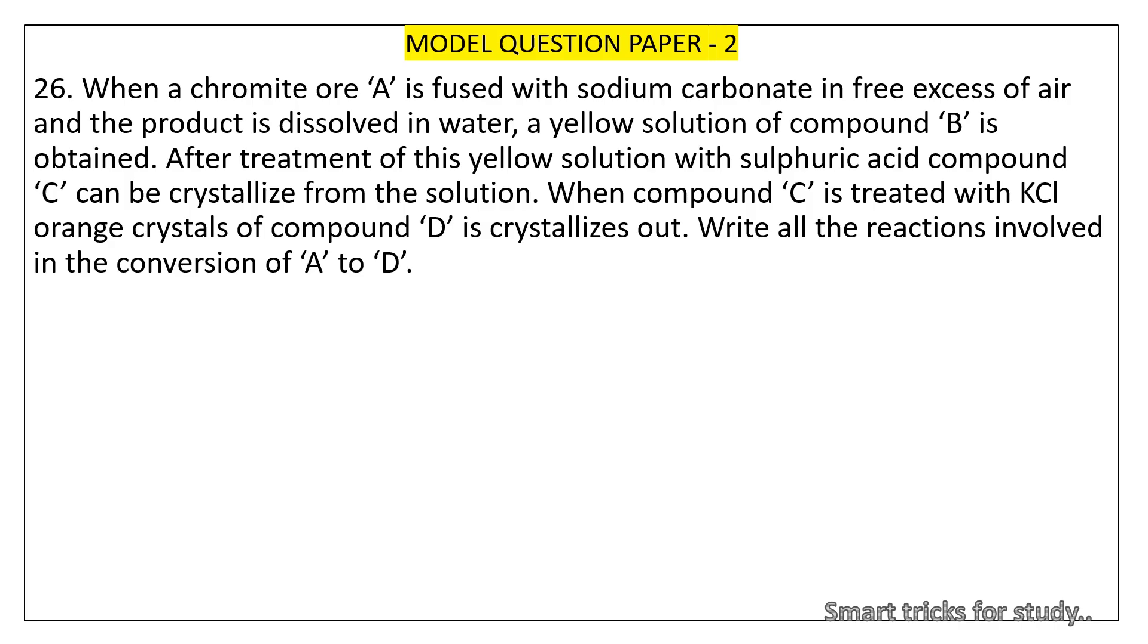Model Question Paper 2. 26. When a chromite or A is fused with sodium carbonate in free excess of air and the product is dissolved in water, a yellow solution of compound B is obtained. After treatment of this yellow solution with sulfuric acid compound C can be crystallized from the solution. When compound C is treated with KCl orange crystals of compound D is crystallized out. Write all the reactions involved in the conversion of A to D.